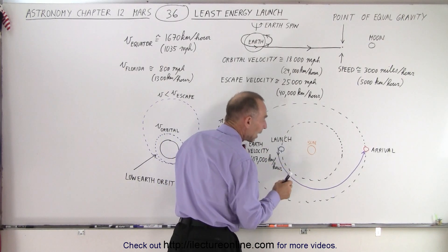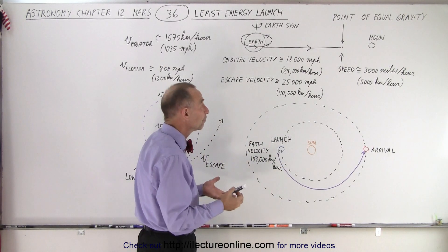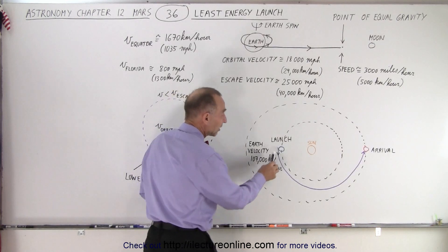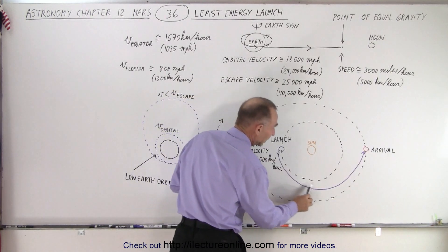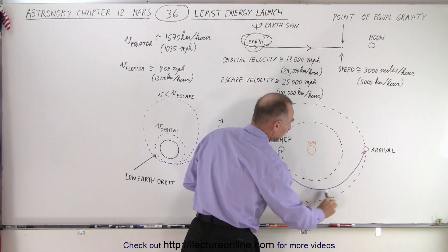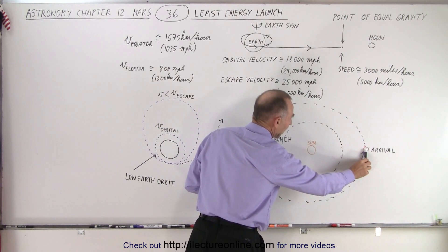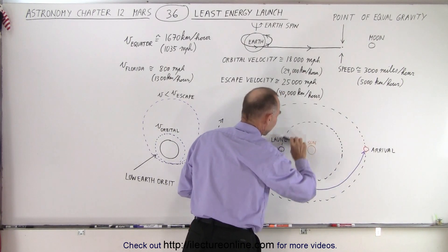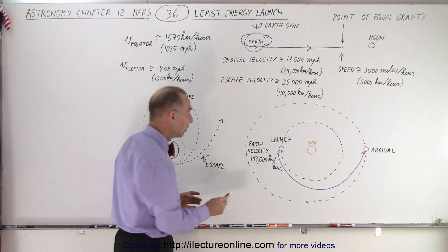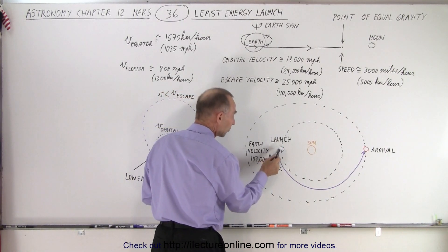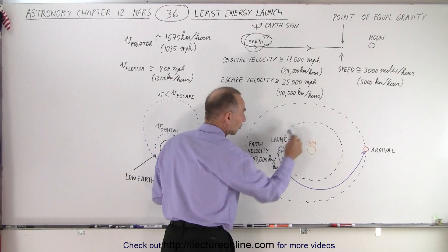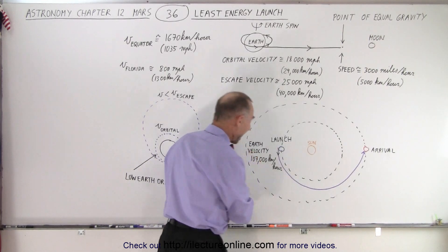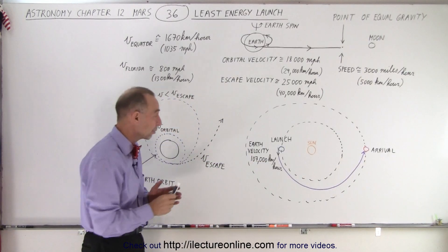How much speed do you need? Well, you don't necessarily have to get up to the escape speed of the earth because you just want to get into that elliptical orbit—the elliptical orbit that will reach its maximum height at this point and then fall back down to the earth. The key here is to launch in the same direction as the earth's motion around the sun, because the earth is moving at about 107,000 kilometers per hour.